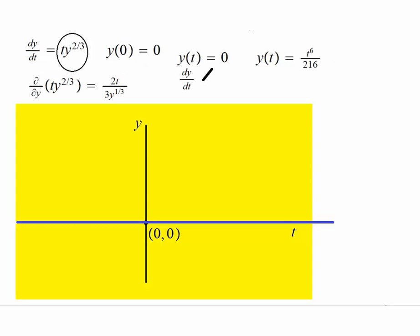So now we have two different solutions of this initial value problem. One is right here, y(t) equals zero, and the other one is t to the six over 216. If I sketch a crude graph of it, that will look like, it's t to the six over 216, so it'll be really flatter here.